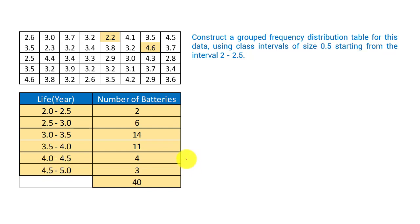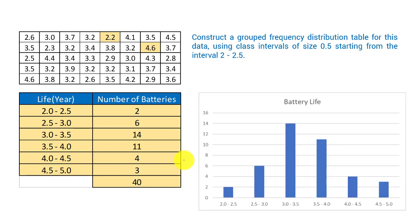So we have constructed the grouped frequency distribution table. If you want to show the bar graph, then you can show it. You can observe the maximum battery life is 3 to 3.5 years.